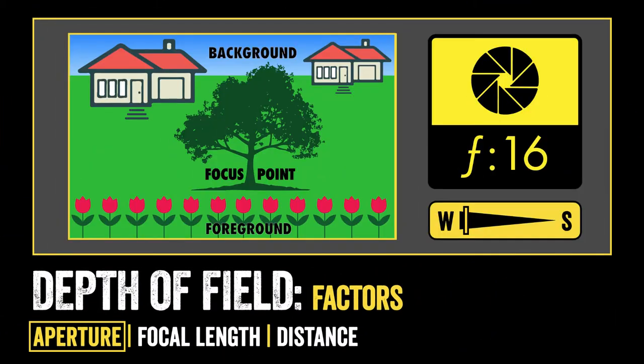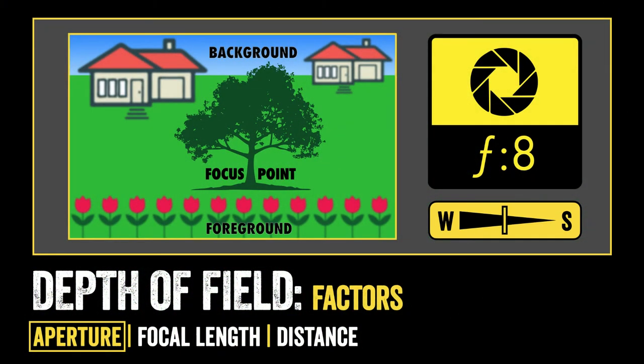On the right, underneath the F16 icon, you'll notice a scale — wide on the left for a wide depth of field, and S on the right for shallow depth of field. To help you visualize, we'll start with F16, which has a wide depth of field. The foreground is in focus, the tree that's the focal point is in focus, and the houses in the background are in focus. Now as we increase our aperture — as we make the number smaller — as we go from F16 to F8, we begin to decrease the amount of depth of field.